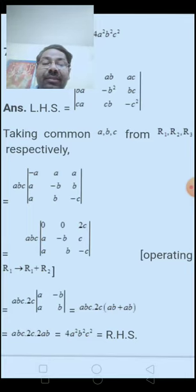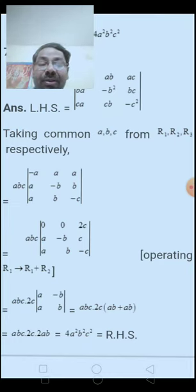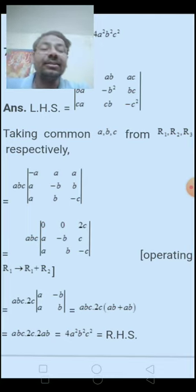Expand. You will find ABC into 2C, AB minus AB. AB, AB, 2AB, so 2AB times ABC into 2C into 2AB. That will give you 4A²B²C².